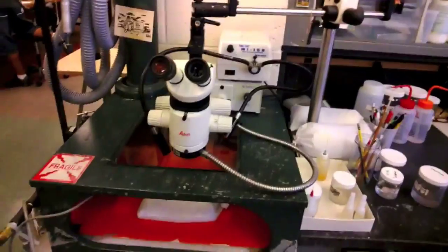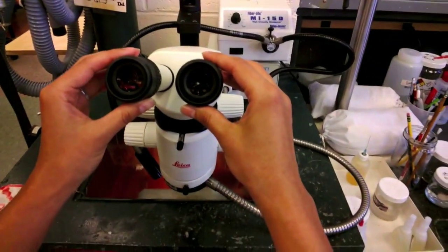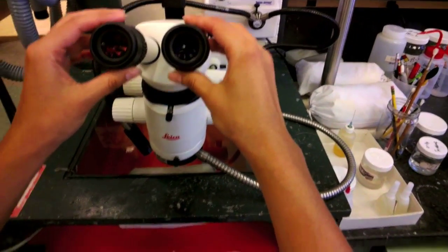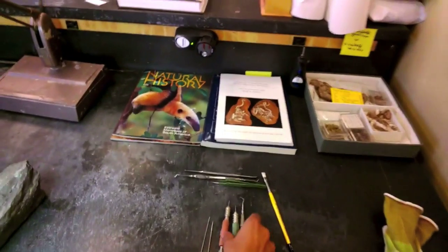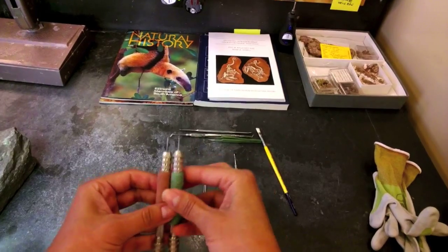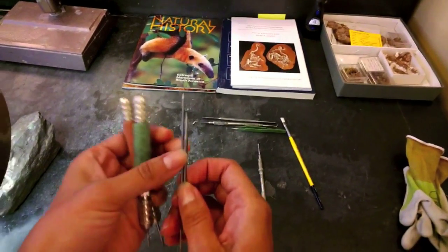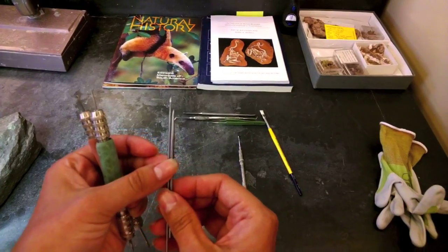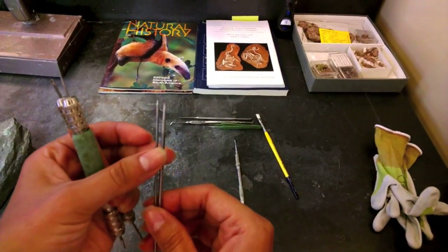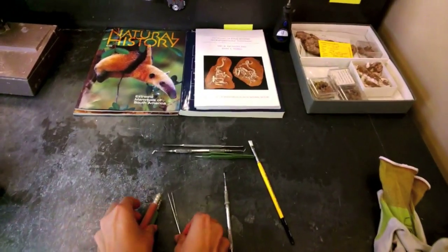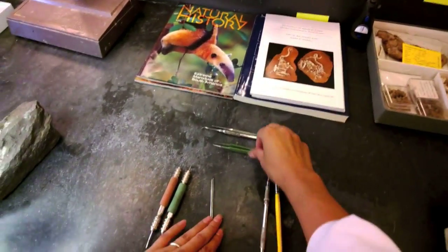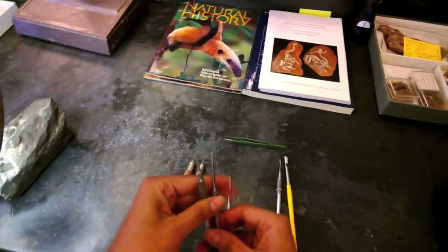Preparators here in the lab normally use microscopes in order to see the finer details of preparation. We also use very traditional and rudimentary tools like these pin vices you see here, and these needles that we have to sharpen every few minutes to get a fine point and fine detail. Brushes of course, and tweezers and other dental tools as well.